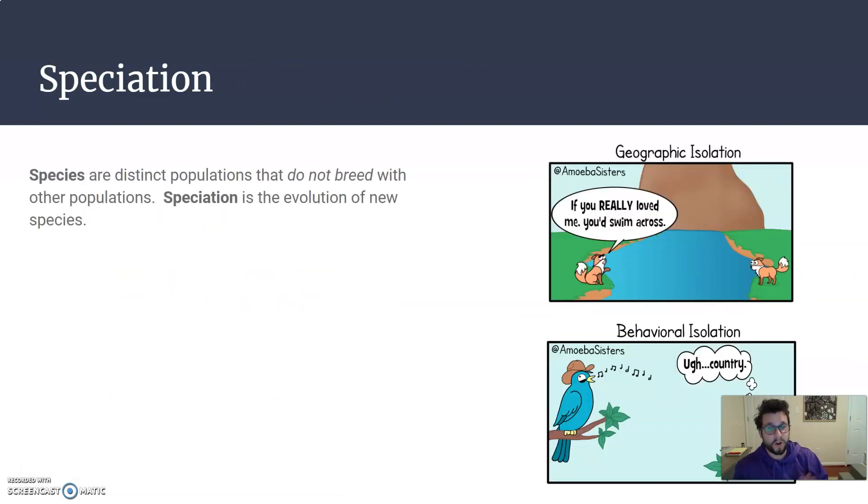So species are the distinct populations that don't breed together. Speciation is when we evolve and create new species. So it can happen through different kinds of isolation. Whatever reason why they don't reproduce together anymore, there can be a lot of them. If they're in different areas, they can be separated by geographic isolation. They're not exchanging genes anymore, and they can become more different.